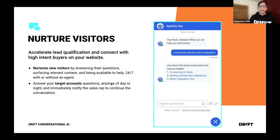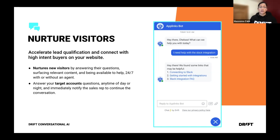Continuing on how AI can build a better buyer experience and take customers through the funnel more seamlessly — let's double-click into nurturing visitors. When we talk about nurturing visitors, we mean giving new visitors relevant content to answer their questions, being available 24/7 with or without an agent, and identifying when a target account hits your website. Even if agents are not online, we have the capability to notify the sales rep to continue the conversation in real time or book a meeting.